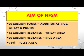Aim of the National Food Security Mission: To produce 20 million tons of additional rice, wheat, and pulses to meet the projected consumption requirements of food grains.